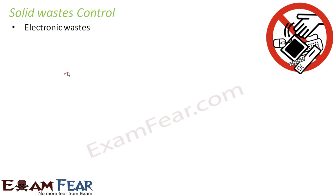Electronic wastes are composed of things like a broken computer or a broken mobile phone that cannot be repaired, so you just throw them away. These electronic goods together form electronic waste. They contain a lot of toxic substances — metallic wastes which are not biodegradable and harmful chemicals.